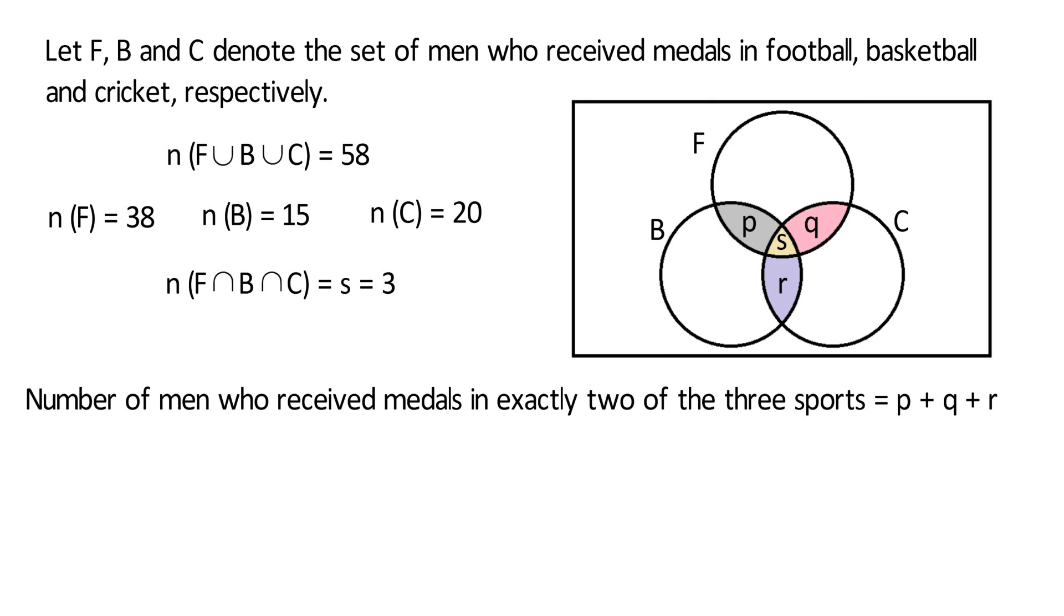As can be seen from the Venn diagram, the number of men who received medals in exactly 2 of the 3 sports is equal to P plus Q plus R. So we need to determine that, and to determine that, we can make use of this equation.